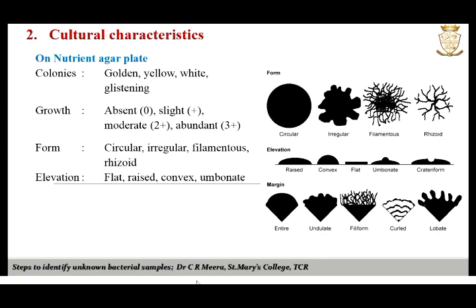The degree to which a colony is raised on the agar surface is called elevation, and observing elevation is useful in identification. When there is no marked elevation from the surface, it is called a flat colony. If slightly elevated, it is called raised. A dome-shaped elevation is called convex, and raised with an elevated convex central region is called umbonate.